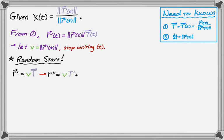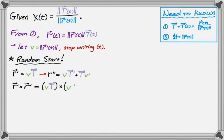So r prime equals v times T. I'm going to find r double prime using the product rule — first times derivative of the second, plus second times derivative of the first. Remember, v and v prime are not vectors; r prime and r double prime are vectors. Then, for no apparent reason right now, I'm going to find the cross product of r prime and r double prime. By substitution, r prime is vT, and r double prime is what we found with the product rule.